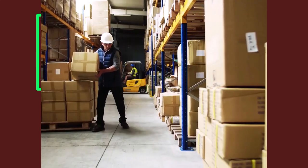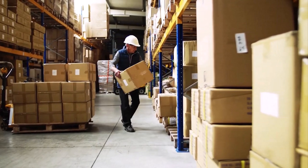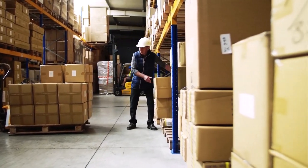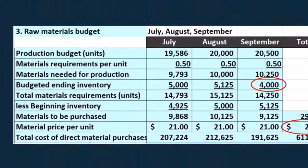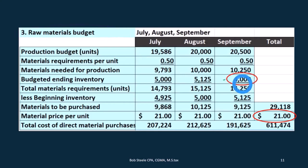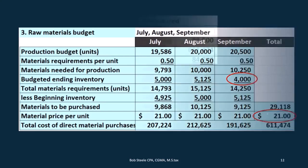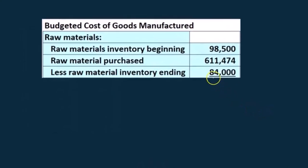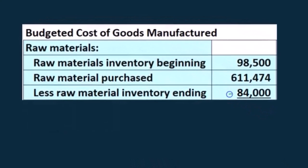In a merchandising company we have beginning balances plus purchases minus the ending balance. Here we're going to do this calculation to figure that out. We jump back to Step 3, the raw materials budget. We've got 4,000 units in ending inventory and $21 per unit, so if we multiply those together we come up with $84,000.